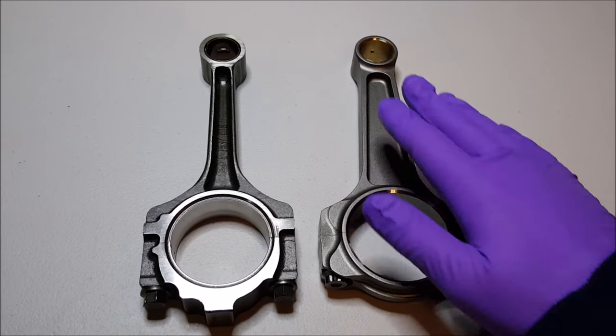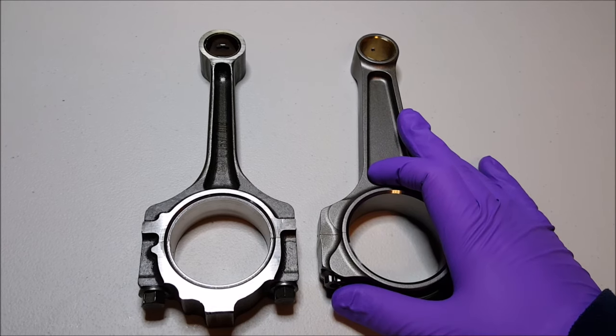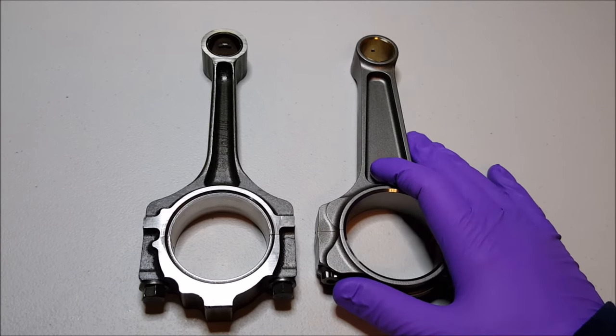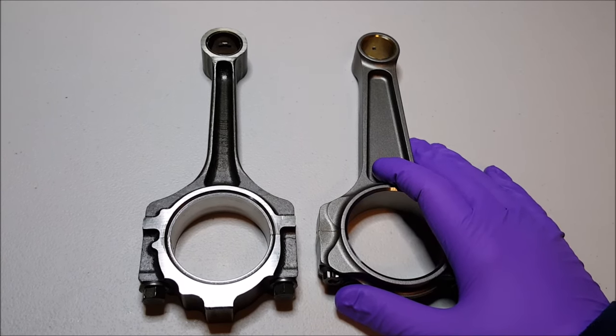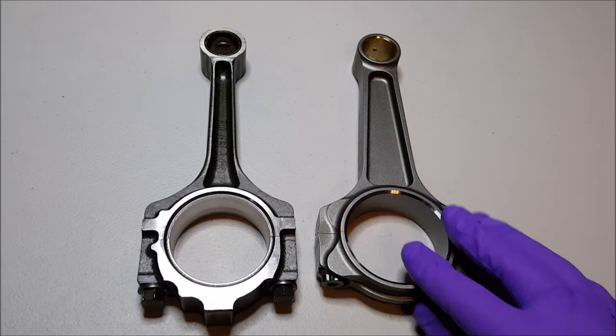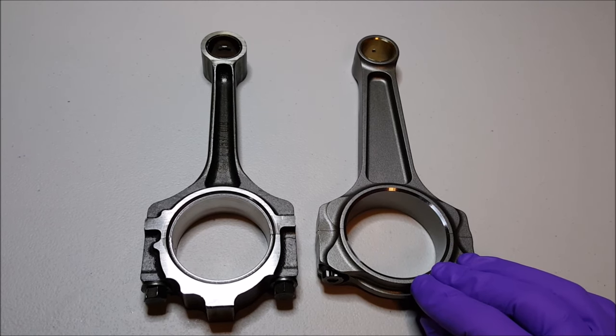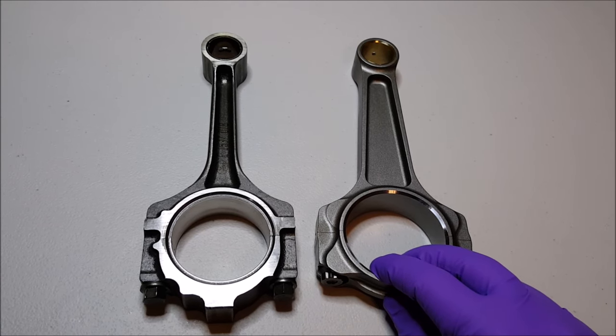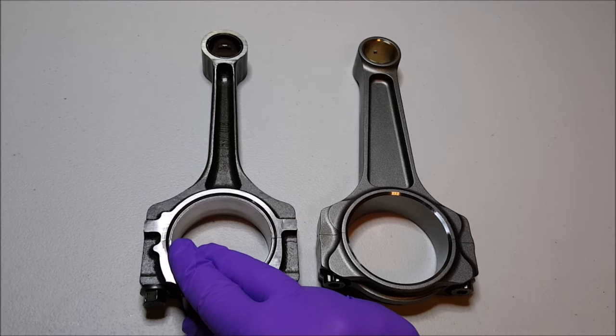So given those two aspects of geometry, which controls the stress, and the material type, and also how it's machined, controls how much stress can be in the material. So that's really essentially how this rod on the right-hand side can sustain so much more horsepower than the guy over here.